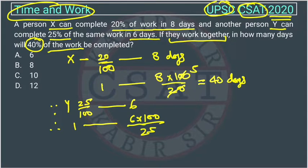So 100 will go up, so I am writing it directly, right? I hope you guys can understand. Then 25 for the 100. So it will take 24 days, right? So now X is taking 40 days to complete a work and Y is taking 24 days to work.